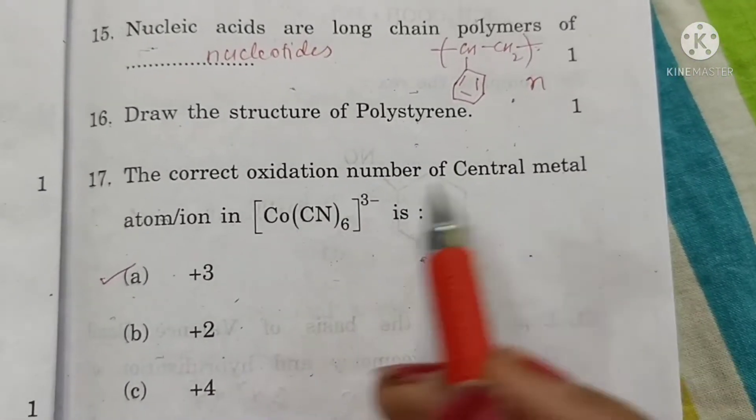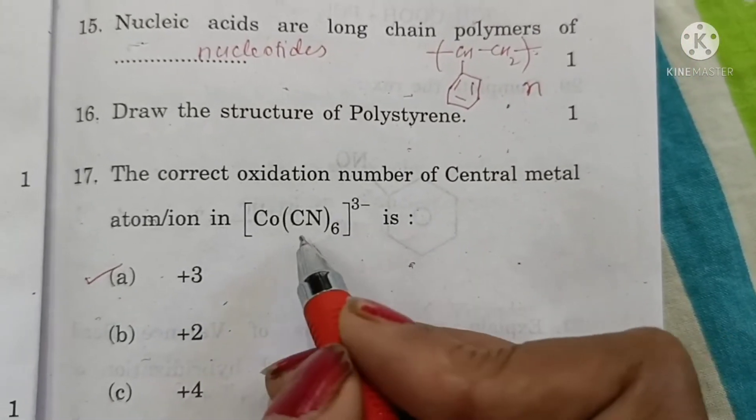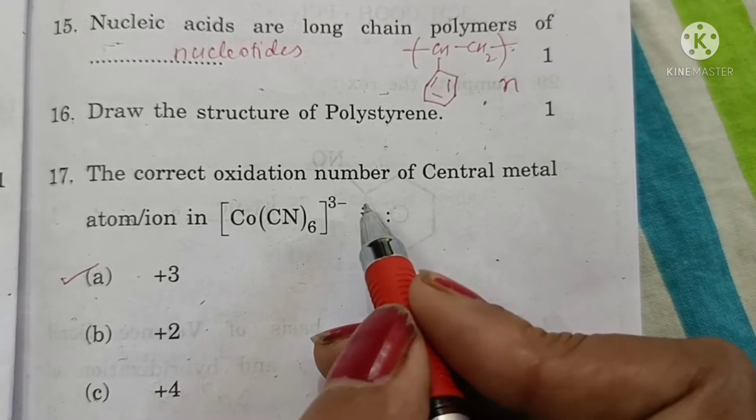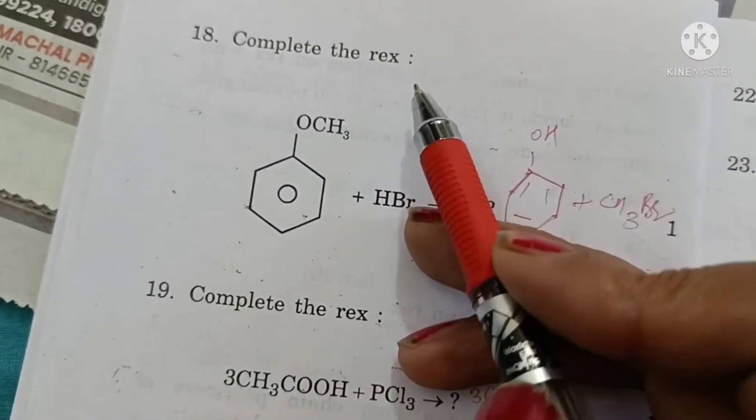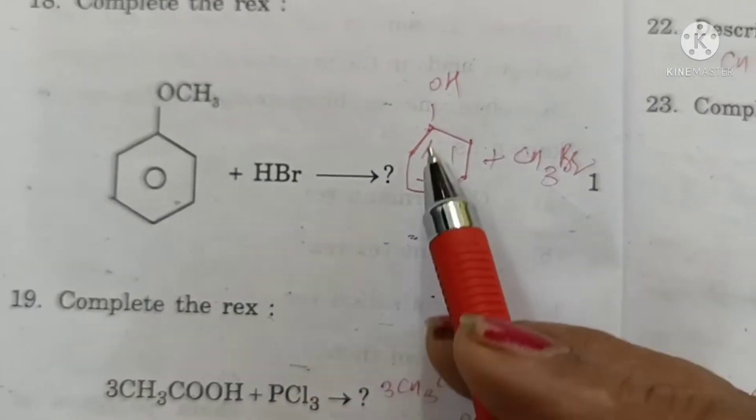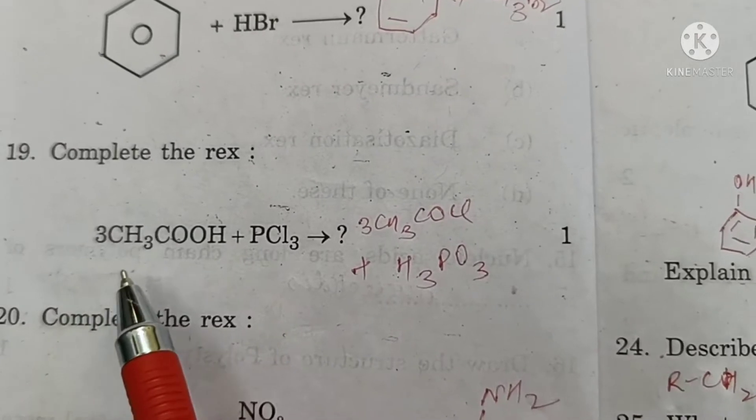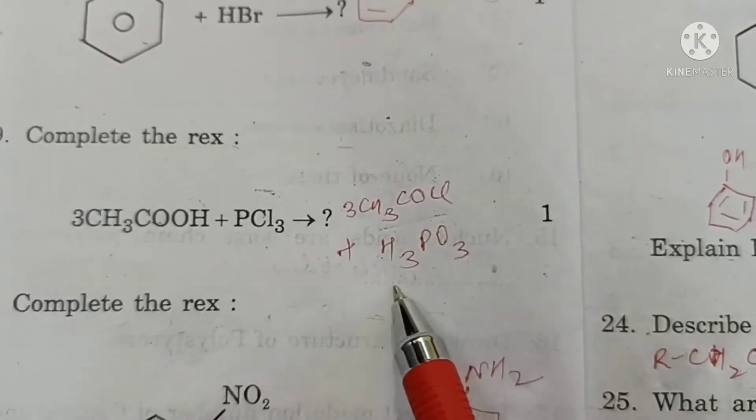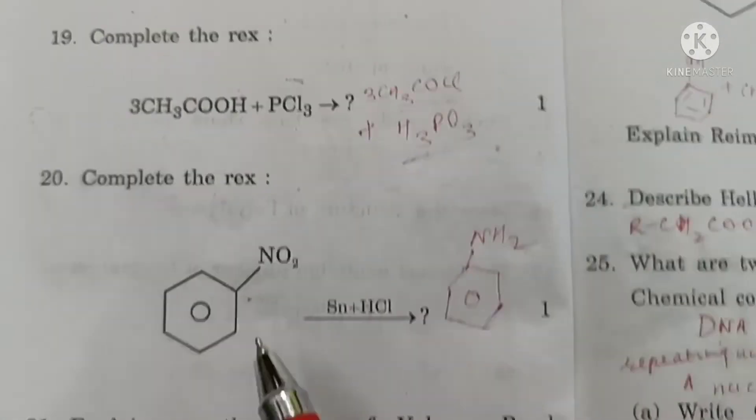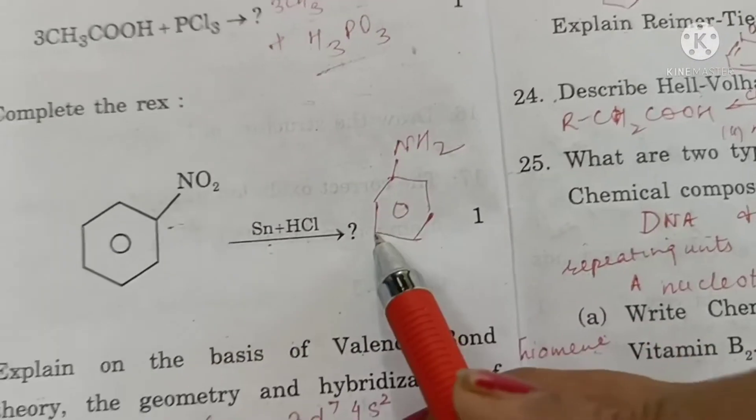The correct oxidation number of central metal atom in hexacyano-cobaltate is X minus 6 equals minus 3. X equals plus 3. Option A is the correct answer. Complete the reaction. Anisole plus HBr will form phenol plus CH3Br. Ethanoic acid plus PCl3, three molecules will form 3 ethanoyl chloride and H3PO3. Nitrobenzene on reduction with Sn plus HCl will form aniline.